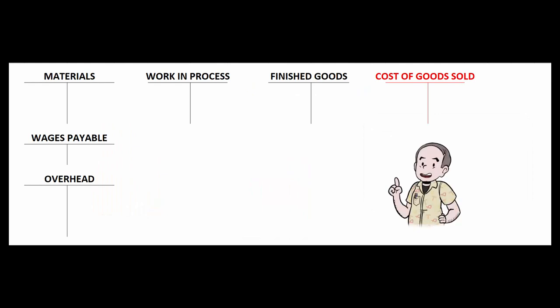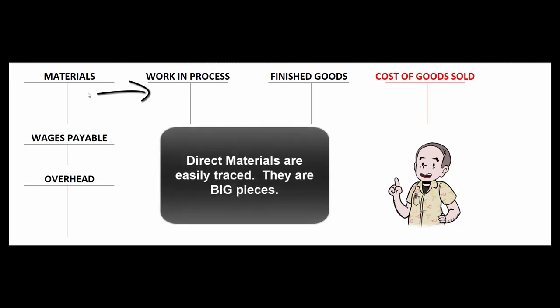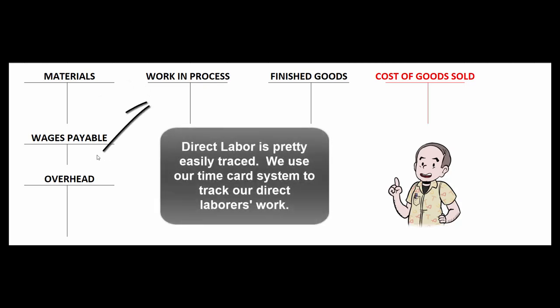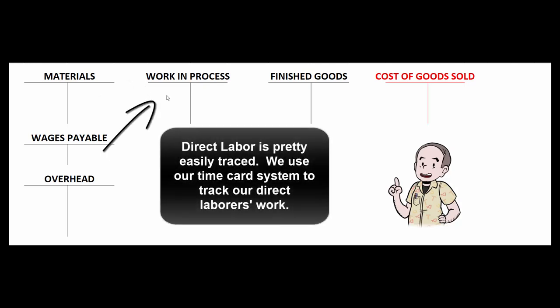When figuring out how much it costs to make our products, it's pretty easy to track direct materials — those are big pieces, and workers have to sign out materials from a supervisor in charge of raw materials. It's also easy to keep track of wages on each job because employees fill out time cards every day telling us which jobs they worked on.